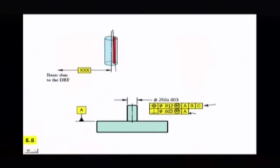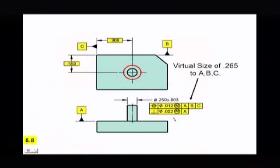So this is a way that you can actually refine the orientation with two feature control frames. Now, two feature control frames, I always get the question, what's the virtual size? Well, actually, you have two virtual sizes. You have a virtual size to ABC, which we already calculated, and now we have a new virtual size to A.